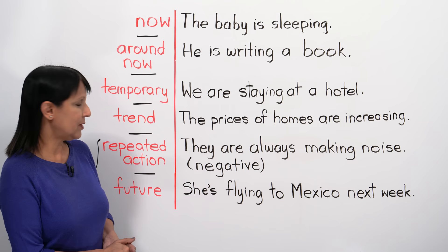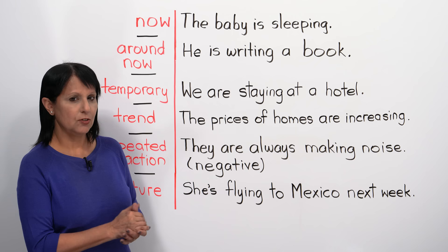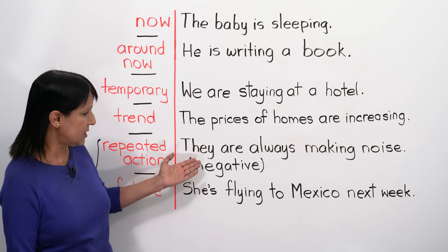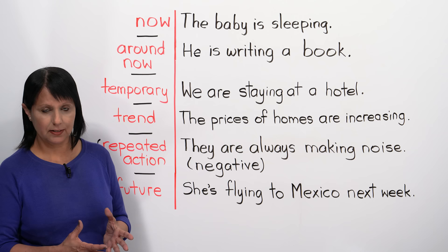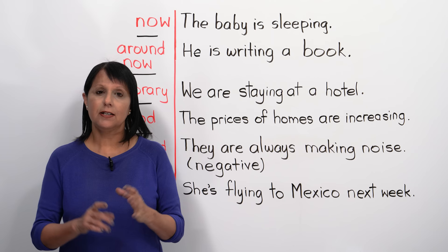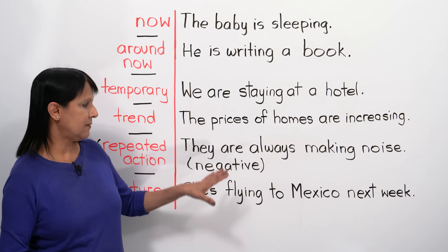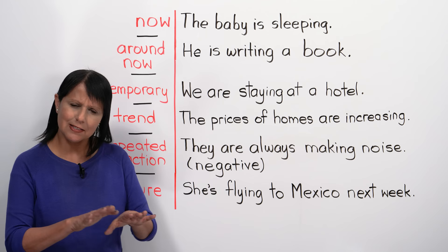There are also two slightly more advanced ways to use this tense. The first is to talk about a repeated action that's usually something negative — when we want to complain about something. For example, 'They're always making noise' — that's a negative remark. So we can use 'always' in this context with the present continuous tense. Usually words like always, never, sometimes, and frequently are used with the present simple, but when you're talking about something negative, you can use the present continuous.